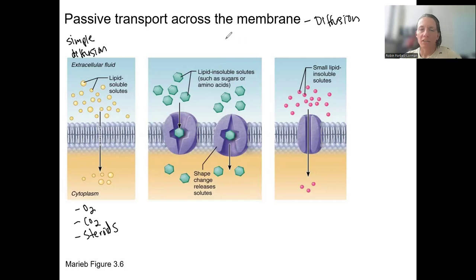Then we've got facilitated diffusion. It's not facilitated by ATP. It's facilitated by a protein. Let's start with this one over here. This one is a channel. In this case, it's not gated. It's just open. These small lipid insoluble, this means probably charged, ions are able to pass through, whereas they can't pass through the hydrophobic tails of the bilayer.